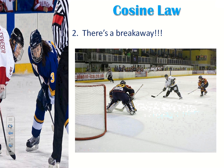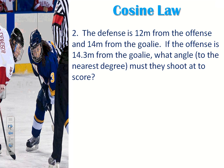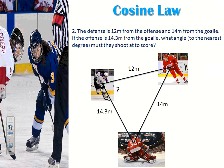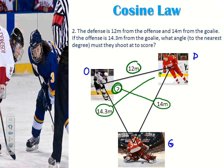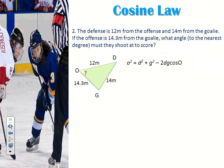Let's get into the hockey problem — there's a breakaway. Here's the word problem: the defense is 12 meters from the offense, and 14 meters from the goalie. The offense is 14.3 meters from the goalie. What angle must they shoot at to score, to the nearest degree? I drew a diagram with the offense, defenseman, and goalie labeled. Notice we can't set up sine law — the missing angle and both partners are absent. So we're going to set up cosine law. Since we're looking for the angle at big O, I'll set up the formula starting with O.